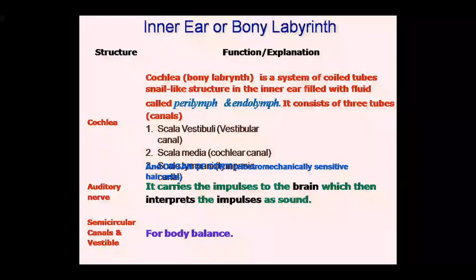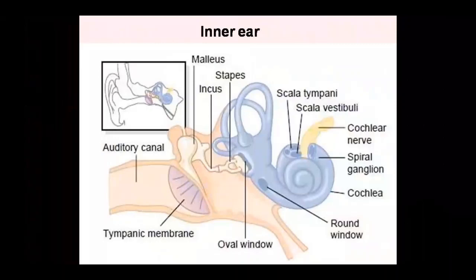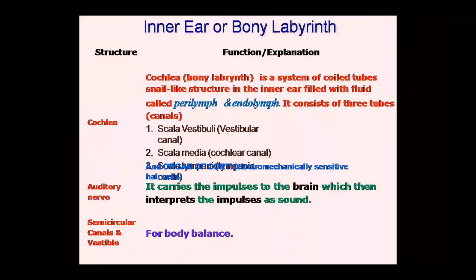The cochlea is a snail-like spiral structure. It is long so that it can fit into a closed space in our body. It is about 9 mm wide at its base and about 5 mm in height. It winds around a section of spongy bone called the modiolus. The modiolus is shaped like a screw, and its threads form a spiral platform to support the cochlea, which is fleshy and unable to support itself.